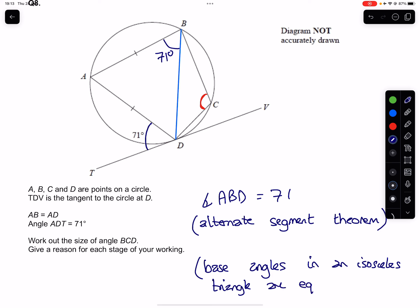And that allows us to draw in angle ADB there as being 71. So angle ADB is 71 degrees.